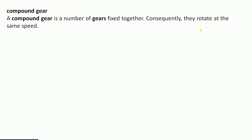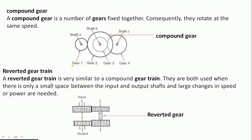In a compound gear, two gears are mounted on the same shaft. The rotation speed of gear 2 equals the rotation speed of gear 3 — N₂ = N₃ — because both are mounted on the same shaft. A riveted gear is similar to a compound gear and is used when a high reduction ratio is required.